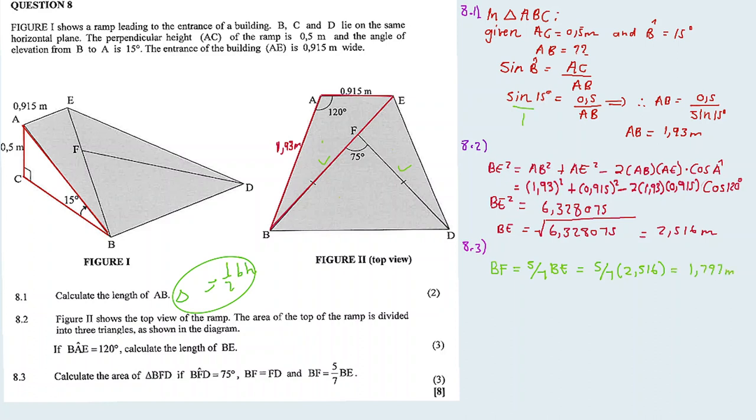So this is our answer for BF. Therefore, it's 1.797 meters, and it's going to be 1.797 meters for FD as well, since BF equals FD.